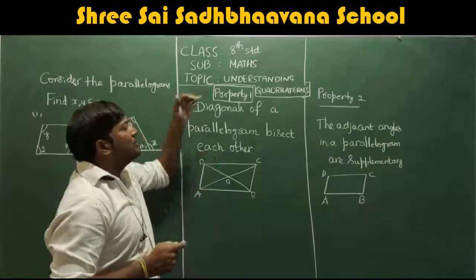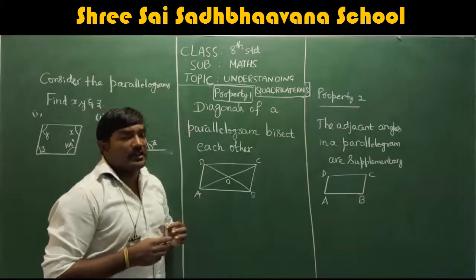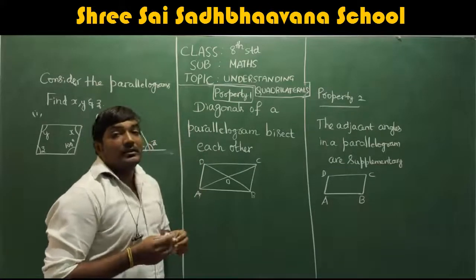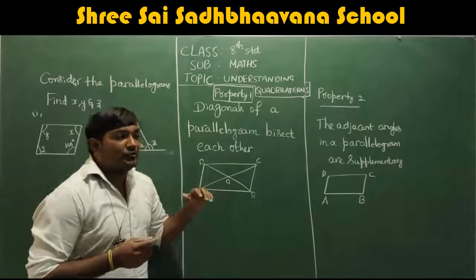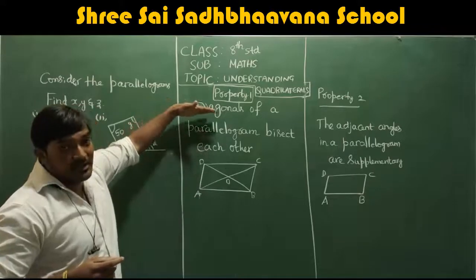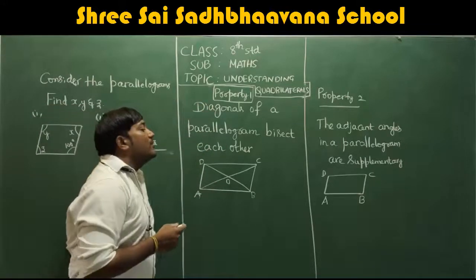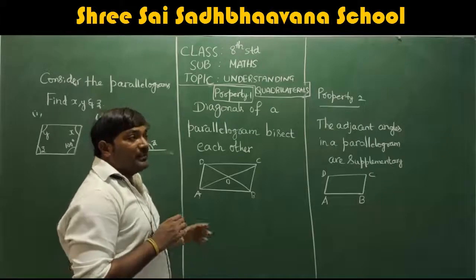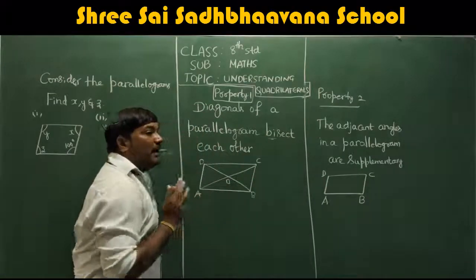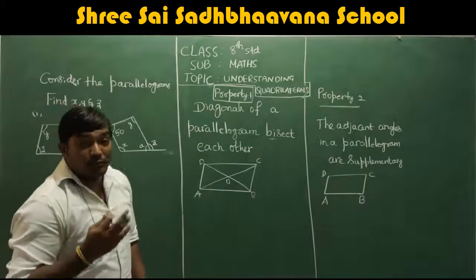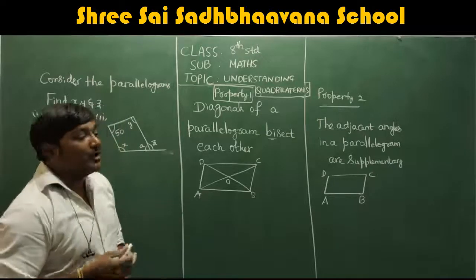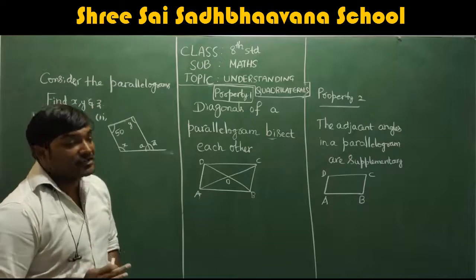Now there is one more property which we are discussing today: diagonals of the parallelogram bisect each other. First you have to know what the word bisect means. Bisect means dividing a line into two equal parts. Dividing a line into two equal parts is called bisection.